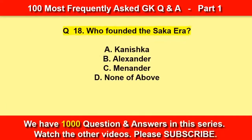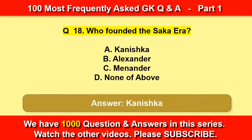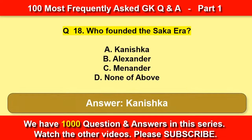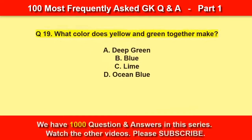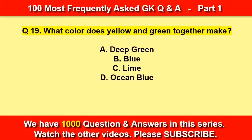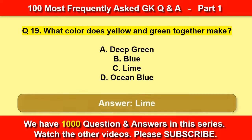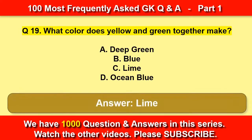Who founded the Saka era? Kanishka. What color do yellow and green together make? Lime.